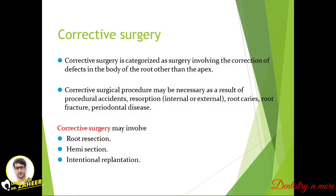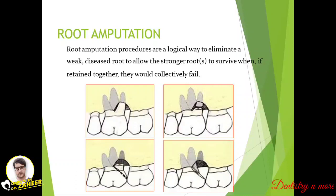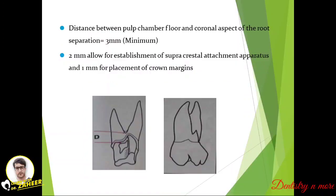Corrective surgery is categorized as surgery involving the correction of defects in the body of the root other than the apex. Corrective surgical procedures may be necessary as a result of procedural accidents, resorptions — internal or external — root caries, root fracture, or periodontitis. It involves root resection, hemisection, and intentional replantation. Root amputation procedures are a logical way to eliminate a weak or diseased root to allow stronger roots to survive, as retaining them together would cause collective failure.